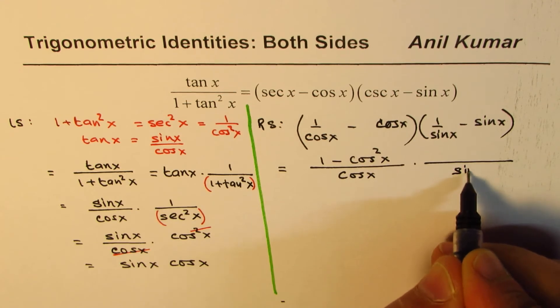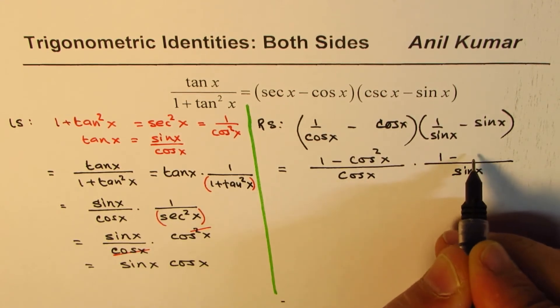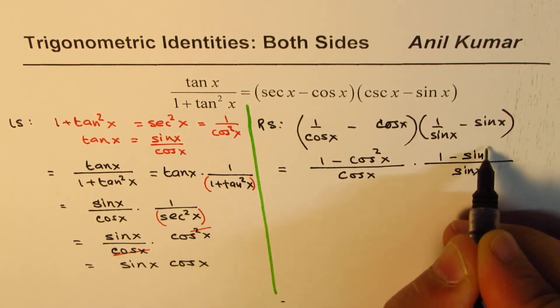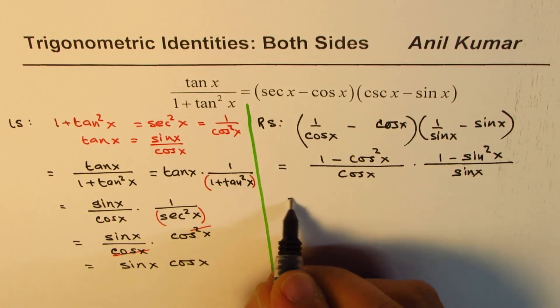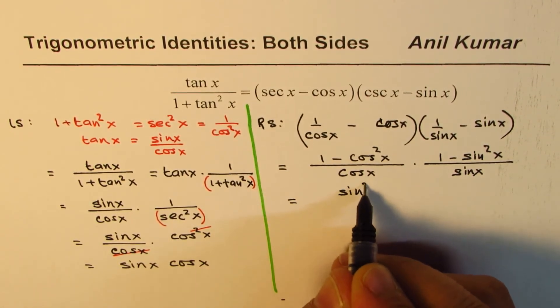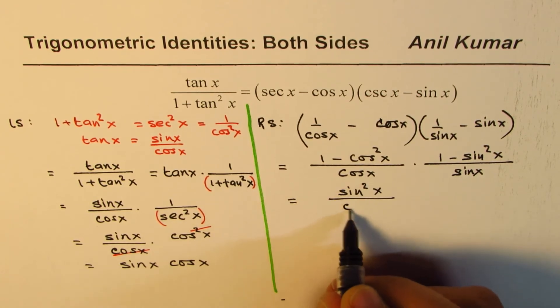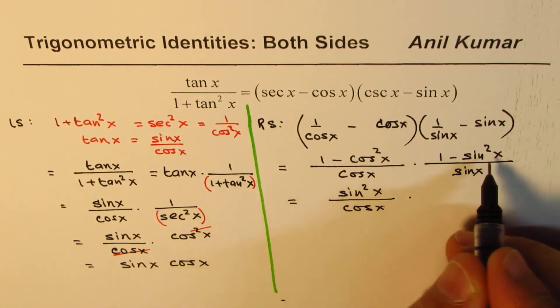sin x times 1 minus sin x. Now 1 minus cos square x is sin square x, we have cos x here. 1 minus sin square x is cos square x, and we have sin x in the denominator.